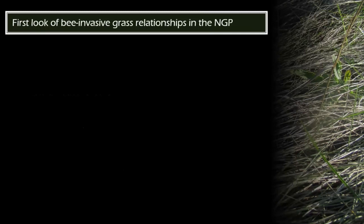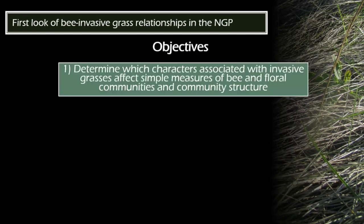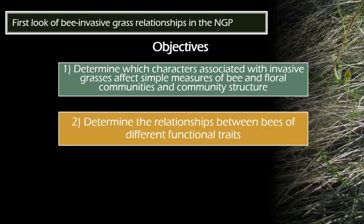This is a first look at the relationship between invasive grasses and associated plant characters and the bee community. There is a related study in Canada that used non-floral components of the plant community, but I don't think they included the invasive grass aspect. Since it is a first look, I wanted to see simple linear relationships between invasive grasses and the related plant community characters on bee and forb communities, and also determine how those different plant community characters shape the structure of bee and forb communities.